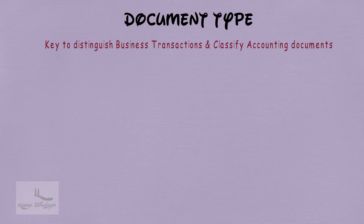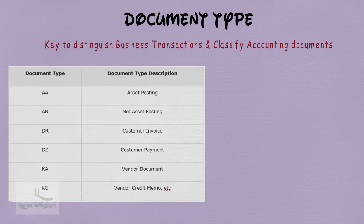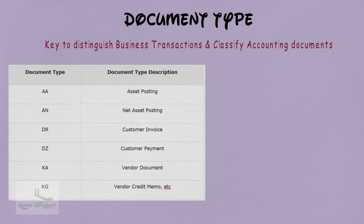Some of the common document types in FI are: AA - Asset Posting, AN - Net Asset Posting, DR - Customer Invoice, DZ - Customer Payment, KA - Vendor Document, and KG - Vendor Credit Memo. We have many other document types as well.